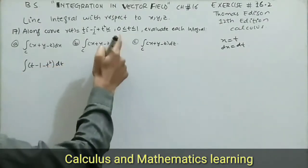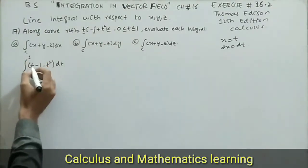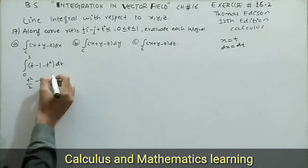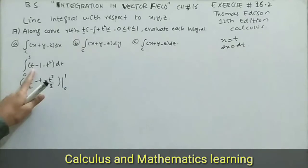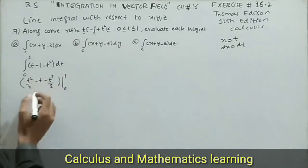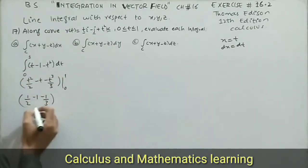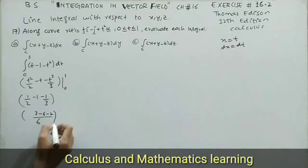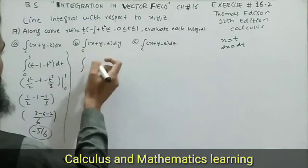The limit is from 0 to 1. The integrand becomes the integral from 0 to 1 of (t² /2 minus t minus t³/3). Putting t=1: 1/2 minus 1 minus 1/3. Taking LCM 6: this becomes 3/6 minus 6/6 minus 2/6, which gives (3 minus 6 minus 2)/6 = negative 5/6. The required answer for part a is negative 5/6.